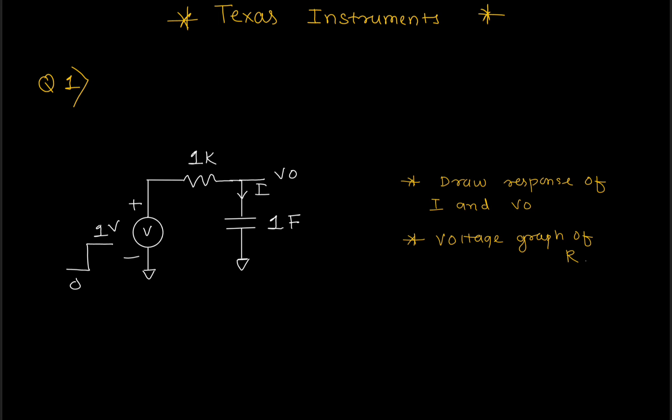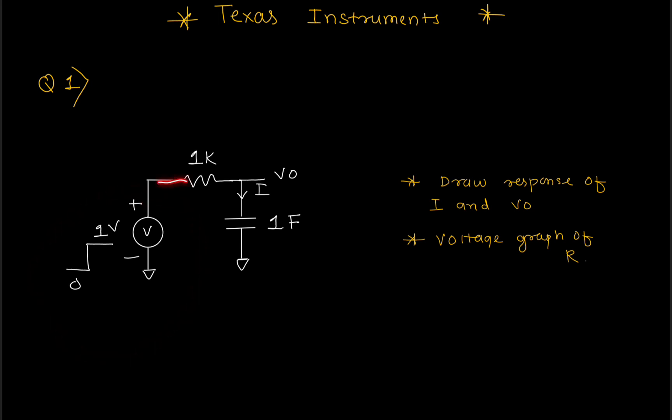In the beginning of the interview, they asked me an RC question. They applied a step voltage response to an RC circuit and told me to calculate the current and voltage. They also told me to calculate the voltage of the capacitor as well as the voltage of the resistor. After that they asked me to determine the pole intuitively. I first told them R equivalent — 1 over R-equivalent times C-equivalent — but they told me to solve it intuitively.